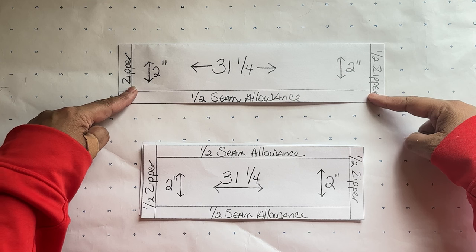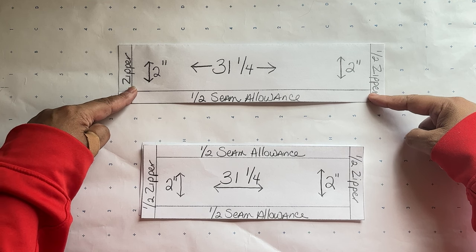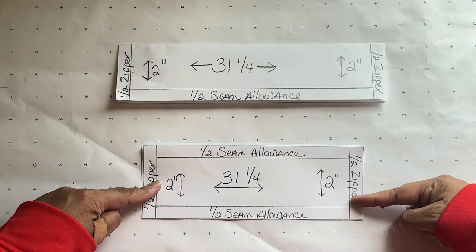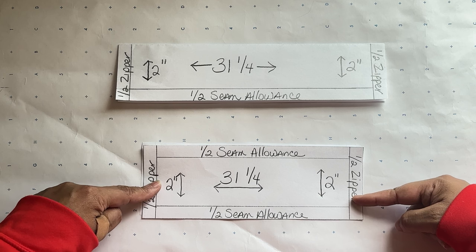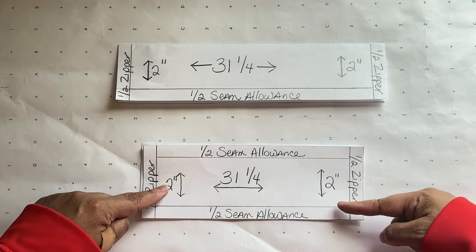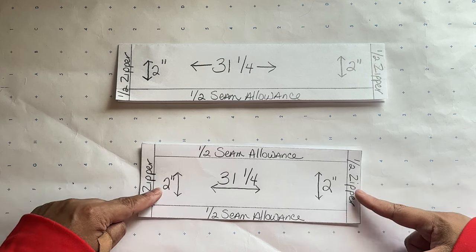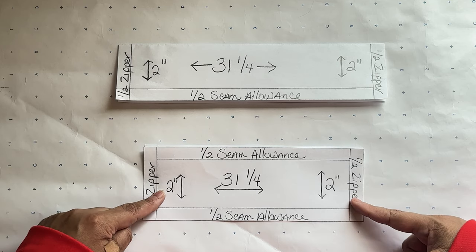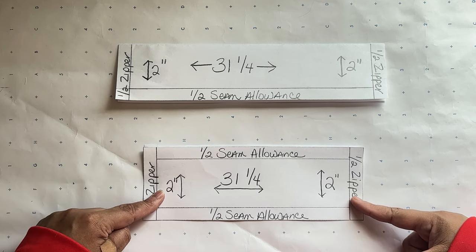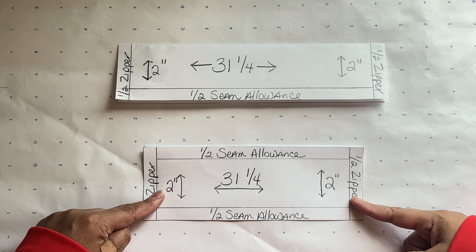I like using both methods, but the second one is really good because when a client tries on a skirt I can see if I need to pinch some fabric from the waistband on top. Some people are smaller two inches up from their waist, so you don't want the waistband to have a gap on top.